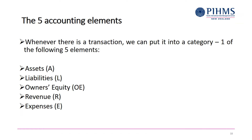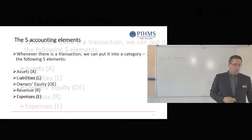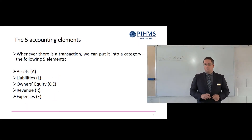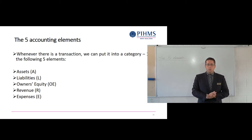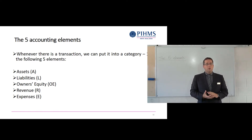Whenever there's a transaction, we can think about which of these elements it affects. Some transactions may affect assets — these are the things that we own. Some things affect liabilities, which are things that we owe to other people. And sometimes a transaction might affect this thing called owner's equity — don't worry if you don't know that term yet, we'll go through it.